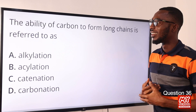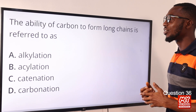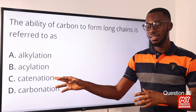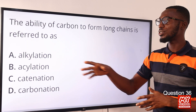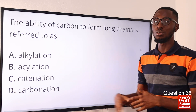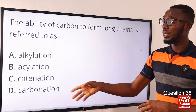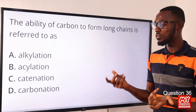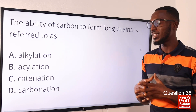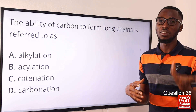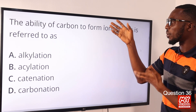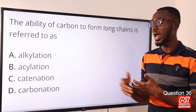Question 36. The ability of carbon to form long chains or rings due to a strong carbon-to-carbon bond is referred to as catenation. Alkylation is the transfer of an alkyl group from one molecule to another. Acylation is the addition of the acyl group. Carbonation refers to adding CO2 to drinks. The correct option here is option C — this phenomenon is referred to as catenation.